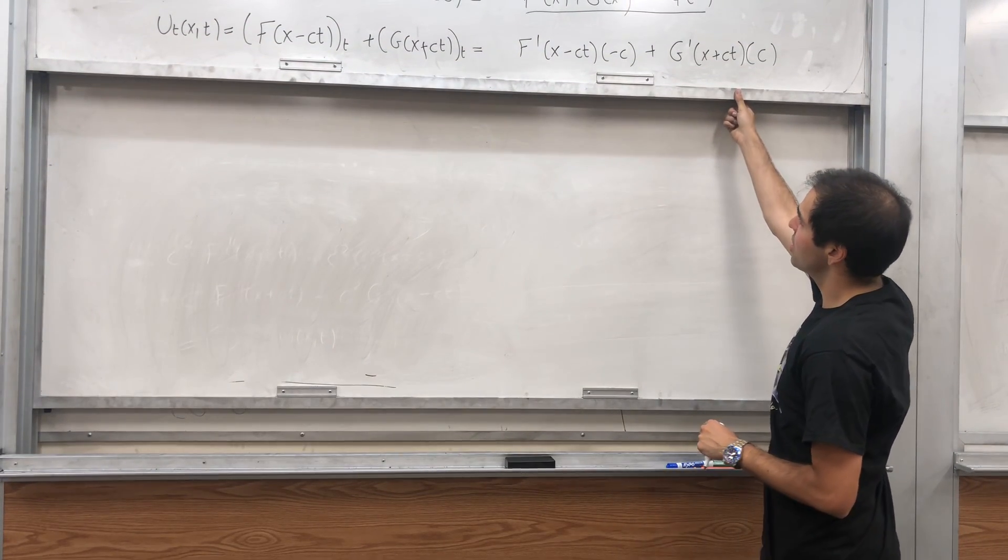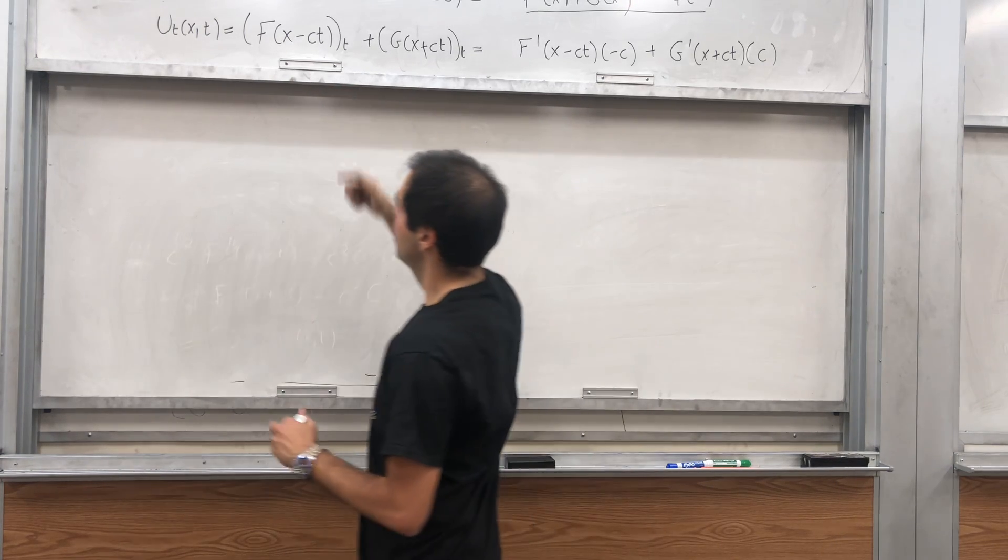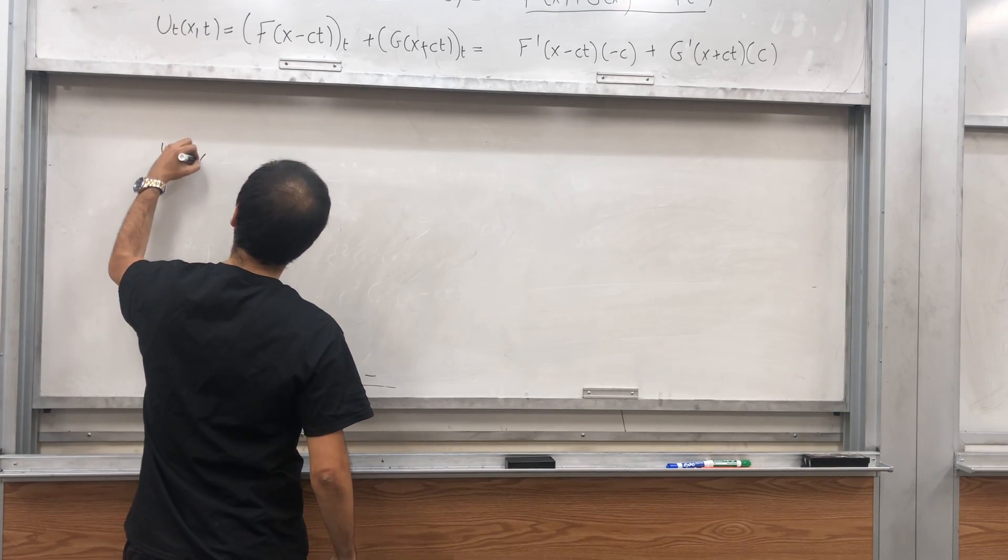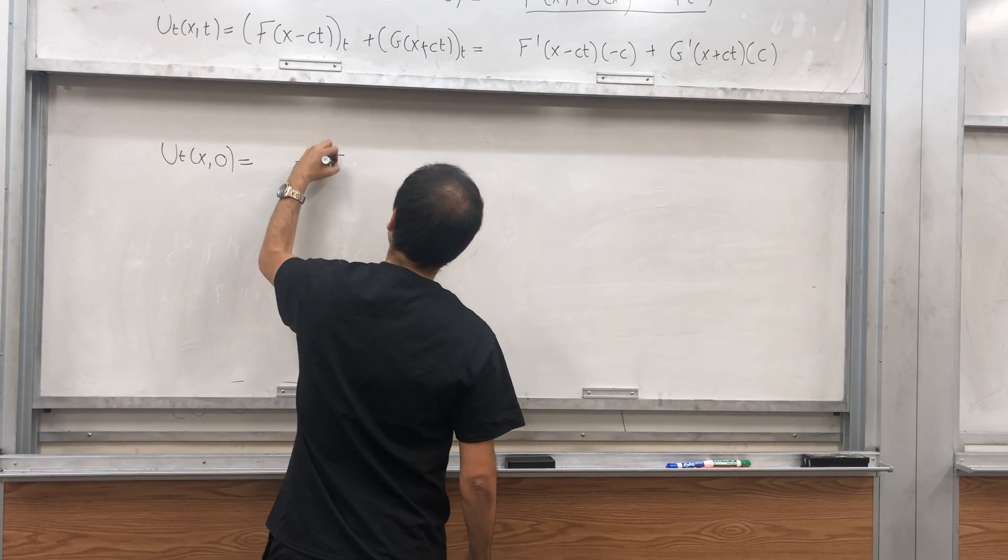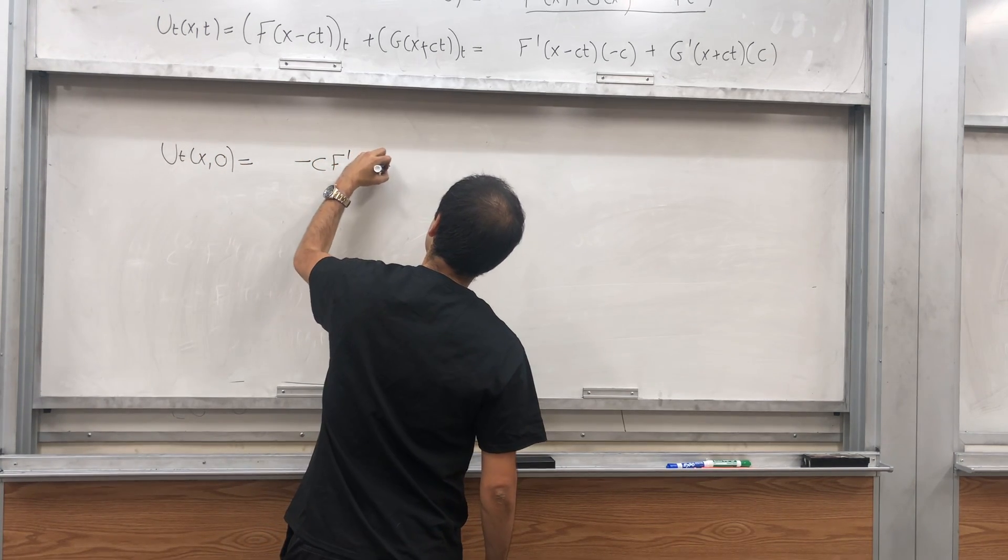So differentiate G, and then you differentiate that with respect to T. And then essentially what we get is, if you plug in T equals zero.